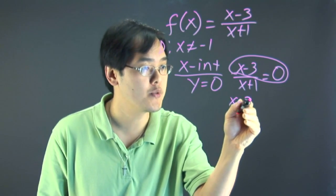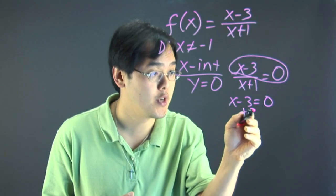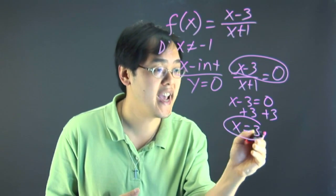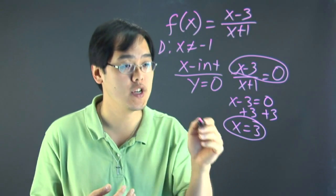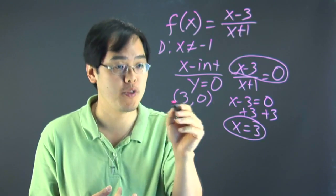So in this case you have x minus three equal to zero and then you want to solve for x. And in this case you add three to both sides. So you have x is equal to three. So that's the x intercept of this particular function. So we're going to express it as an ordered pair, so it would be (3, 0).